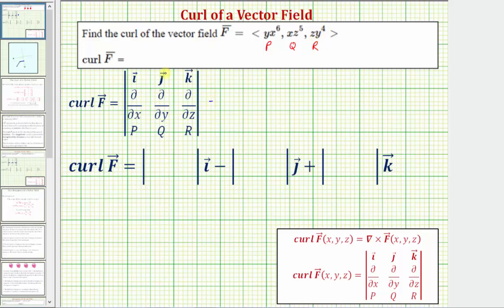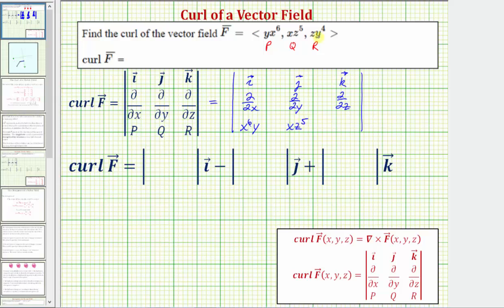So the three by three determinant will have a first row that's the unit vectors i, j, and k. The second row are the differential operators: the partial with respect to x, the partial with respect to y, and the partial with respect to z. The third row is going to be x to the sixth y, x z to the fifth, and y to the fourth z. And now we'll evaluate this using the expansion by minors method.